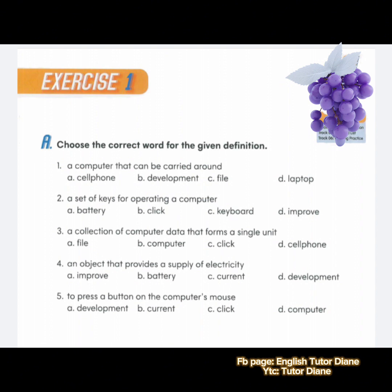Number two: a set of keys for operating a computer. A, battery. B, click. C, keyboard. D, improve. Correct answer is letter C, keyboard. Number three: a collection of computer data that forms a single unit. A, file. B, computer. C, click. D, cell phone. Correct answer is A, file. Number four: an object that provides a supply of electricity. A, improve. B, battery. C, current. D, development. Correct answer is B, battery.